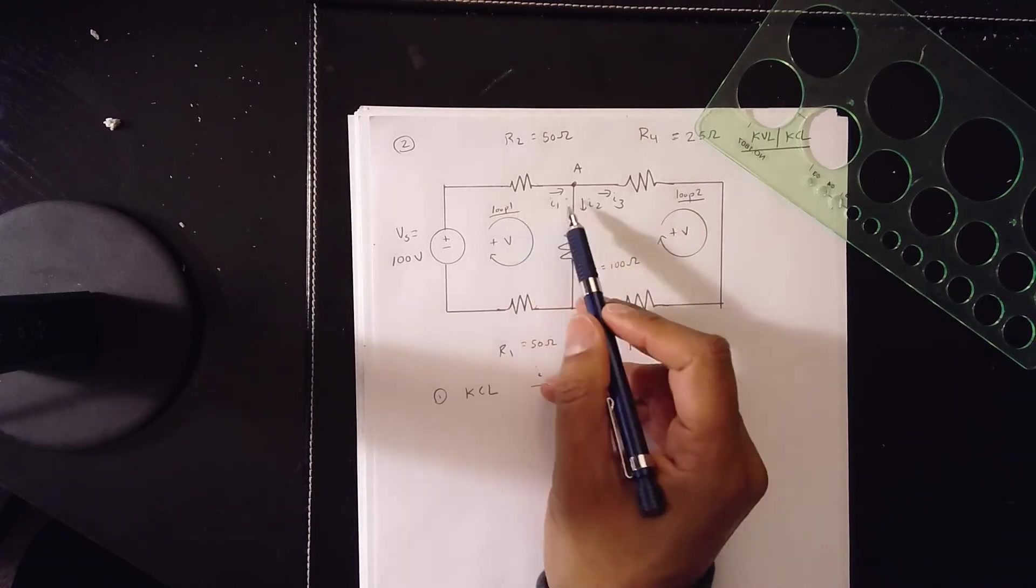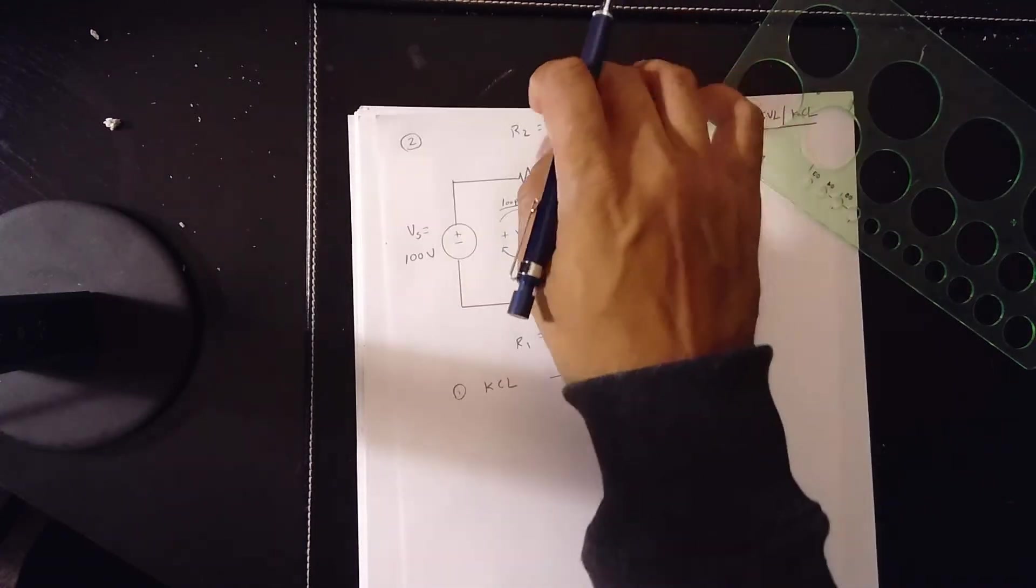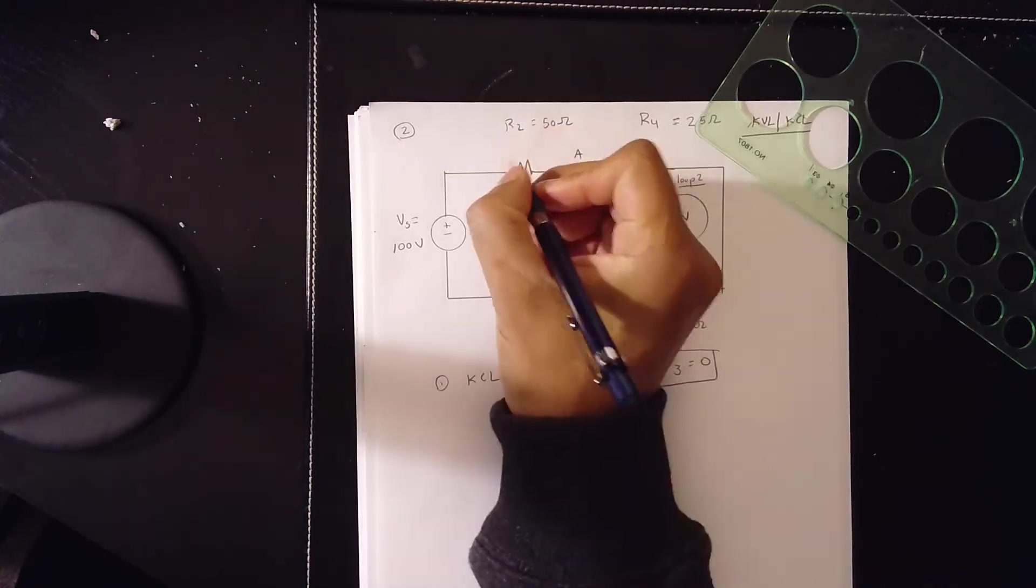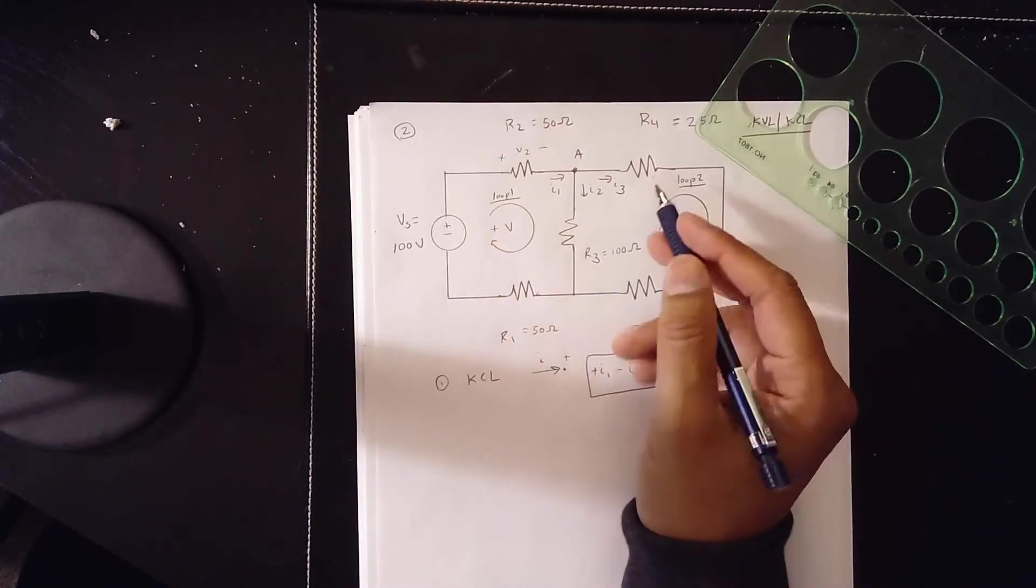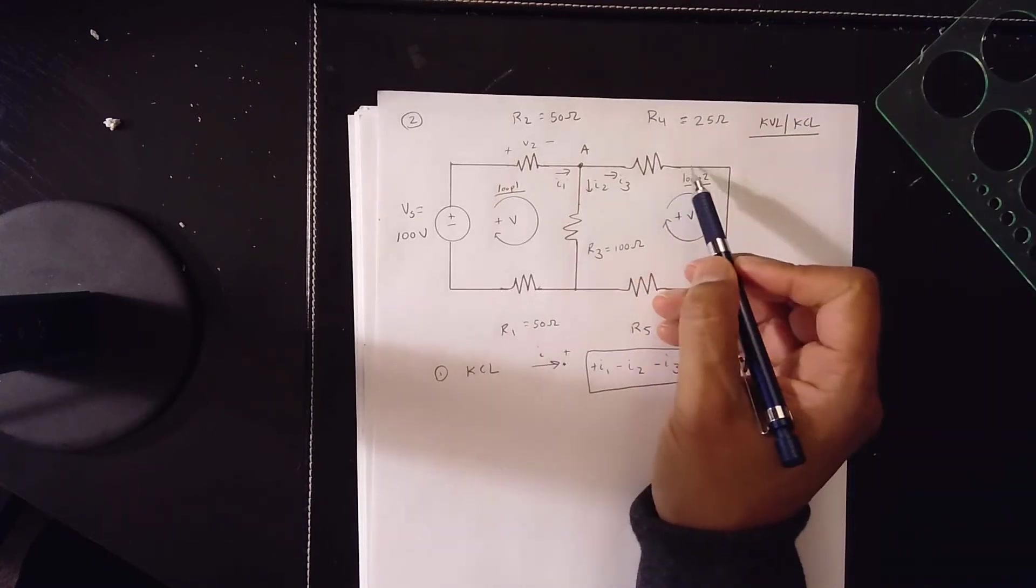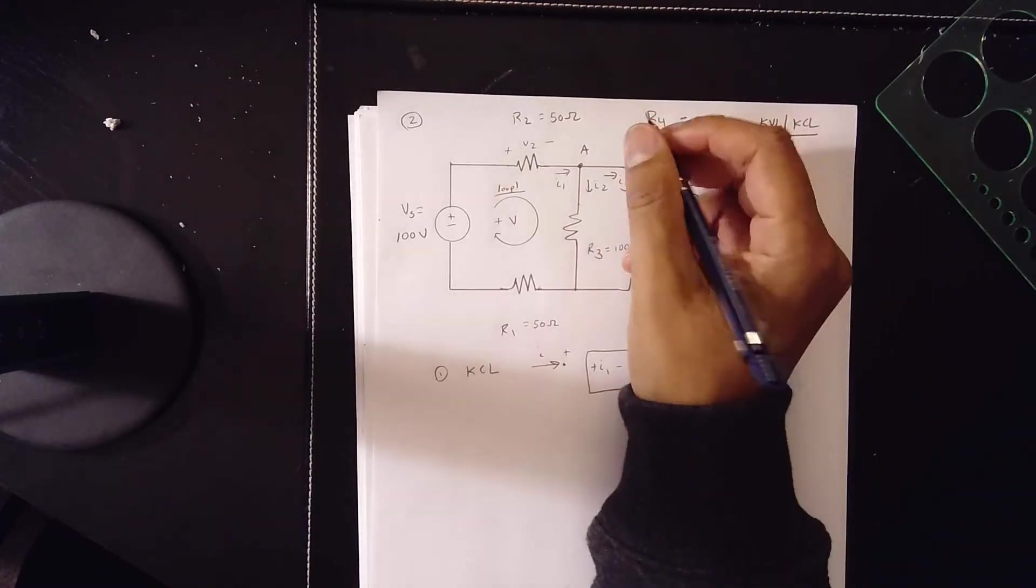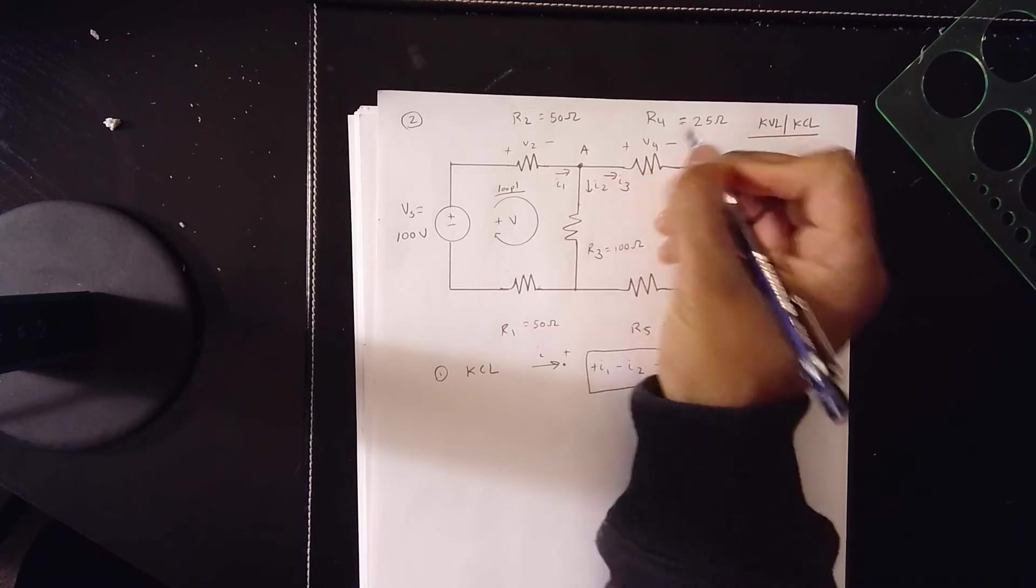When the current goes across this resistor, it induces the voltage of plus V2 because this is resistor two. When the current goes across this resistor, I3 goes across this resistor, it induces a voltage called V4.